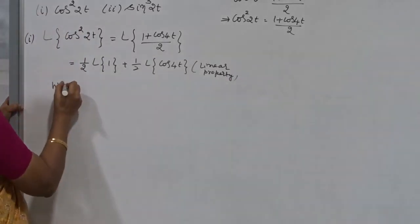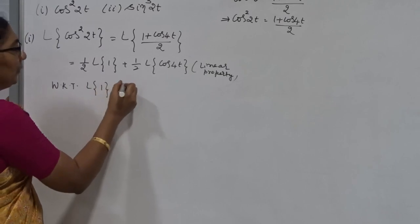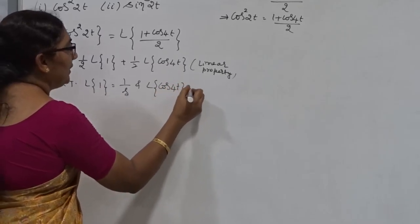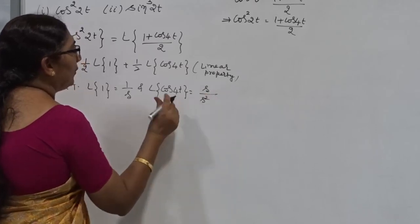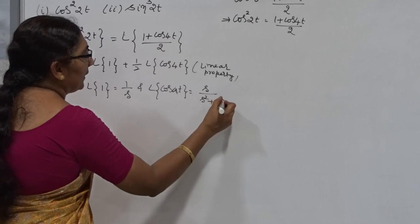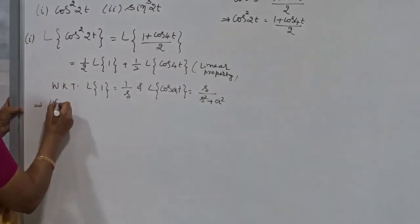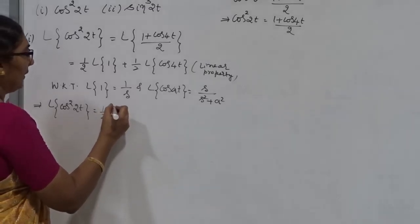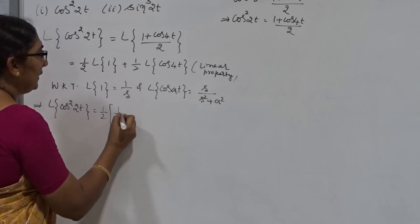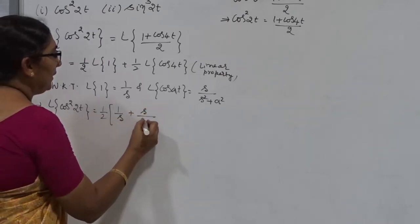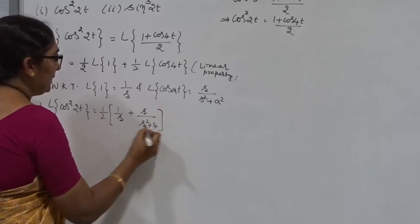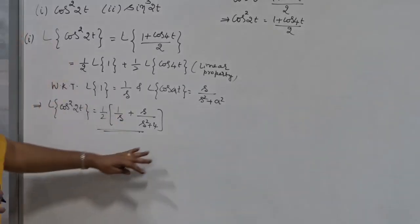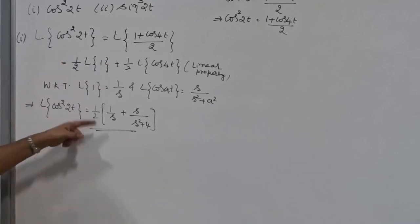Next, we know that before going to write that you write the formula. Laplace Transform of 1 is 1 by S and also Laplace Transform of cos4t. So, what is Laplace Transform of cos4t here? S divided by S square, or if you want to write general formula S by S² plus A². Therefore, this implies Laplace Transform of cos²2t is nothing but 1 by 2 times 1 by S plus S divided by S² plus 4. This is what we need to find out. You can simplify further if you want to take LCM. This is the way to find out Laplace Transform.